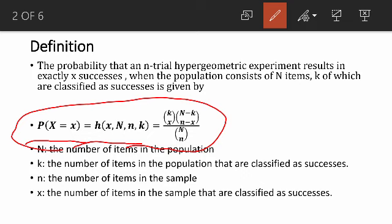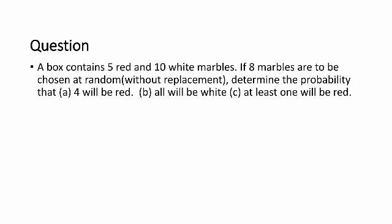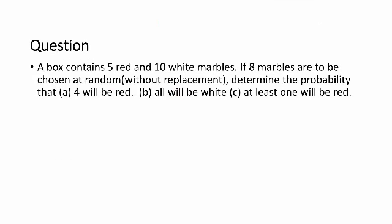So that is it for hypergeometric distribution. The probability of X equal to x is written as H(x; N, n, K), which equals K combination X, times N minus K combination small n minus X, all over capital N combination small n.